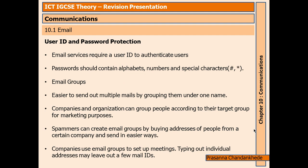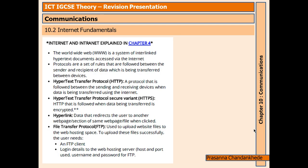User ID and password protection: email services require a user ID to authenticate users. Passwords should contain alphabets, numbers, and special characters such as a hashtag or star. Email groups: it's easier to send out multiple emails by grouping them under one name — just like a WhatsApp group but in email. Companies and organizations can group people according to their target group for marketing purposes. Spammers can create email groups by buying addresses, and companies use email groups to set up meetings.